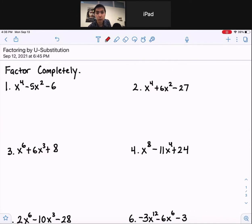So for number 1, I noticed that this degree is double of this one, right? So this gives me an indication, and we have trinomials, that we're going to do u-substitution. So set u equals to the middle term, x squared.